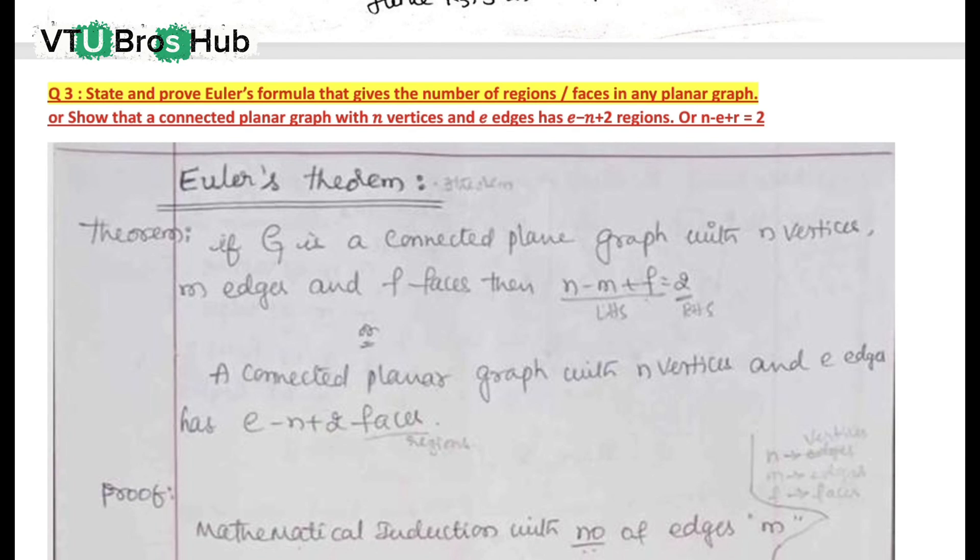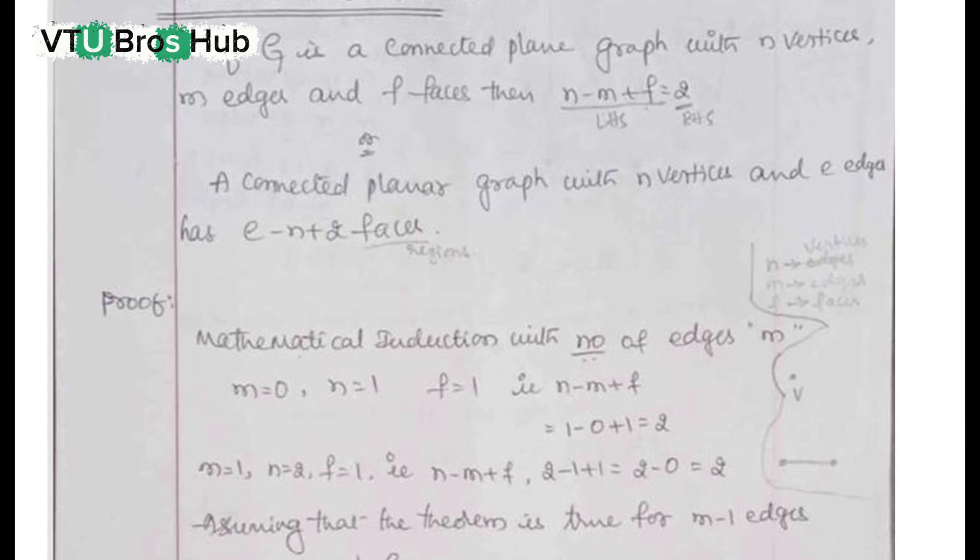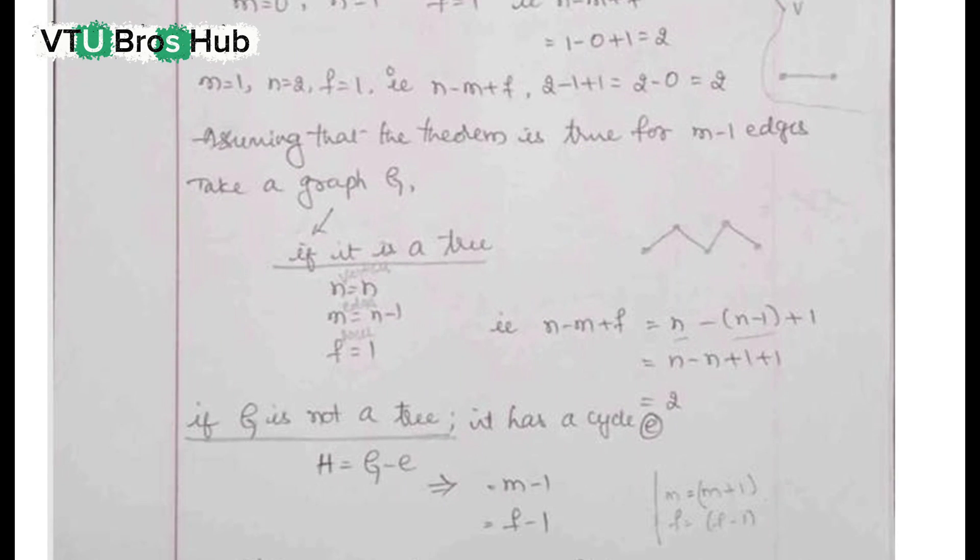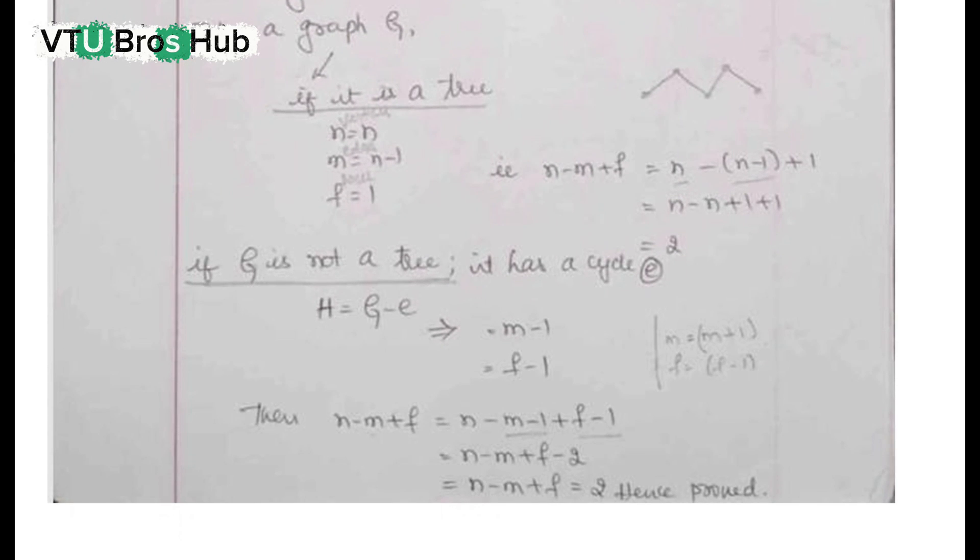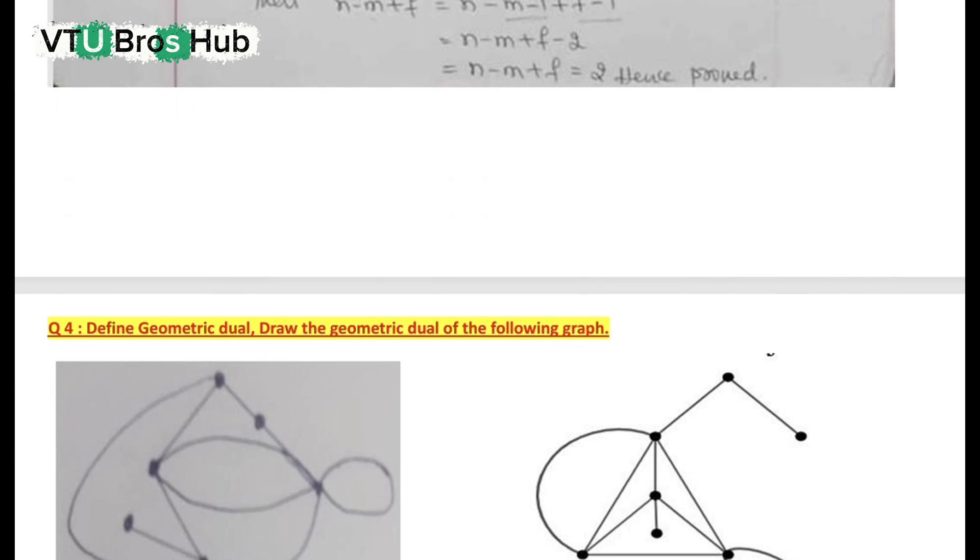Question 3: Euler's formula. Euler's formula is V minus E plus R equals 2. V is the number of vertices, E is the number of edges, and R is the number of regions. Now see the diagram shown. It has vertex, edge, and region counts to verify this formula.